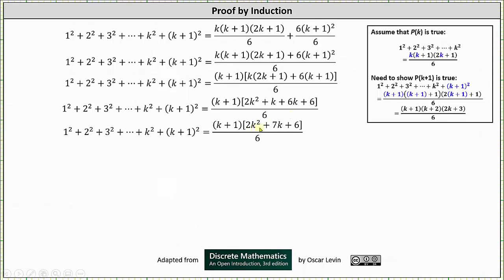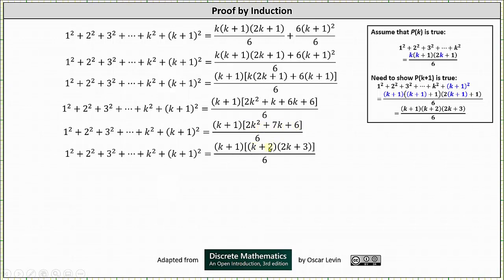Inside the brackets we now have 2k² + 7k + 6, and this trinomial does factor. Looking at our notes on the right, if the factors are (k+2) and (2k+3) we will be able to show P(k+1) is true — and indeed the factors of 2k² + 7k + 6 are (k+2) and (2k+3). For the last step, we write (k+2) as (k+1)+1 and write (2k+3) in the form 2(k+1)+1.